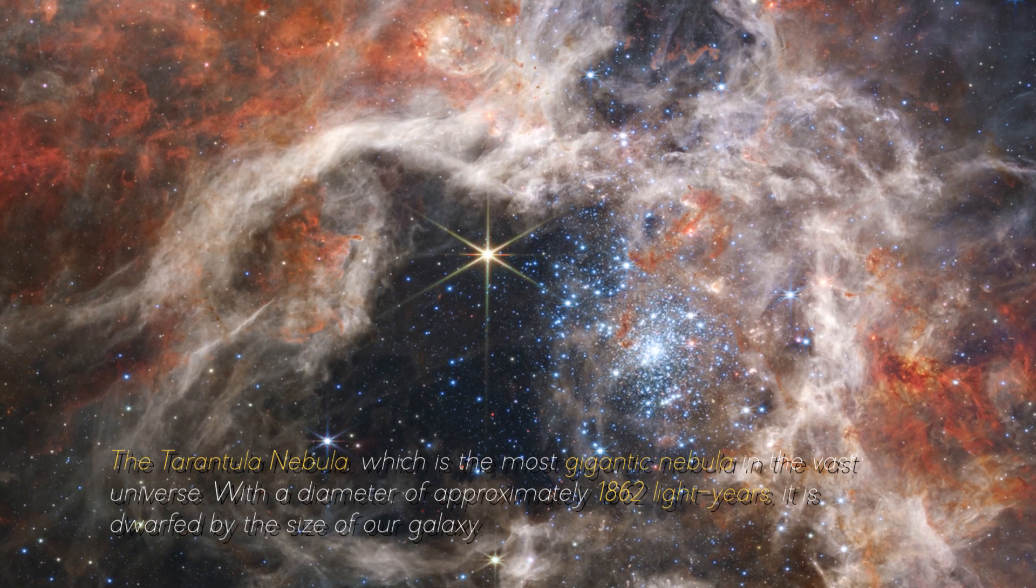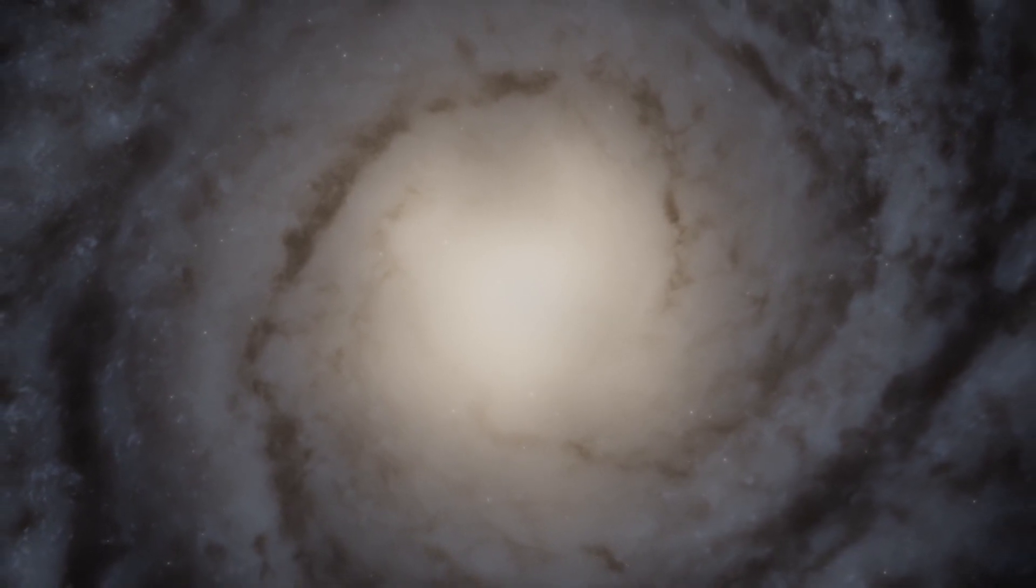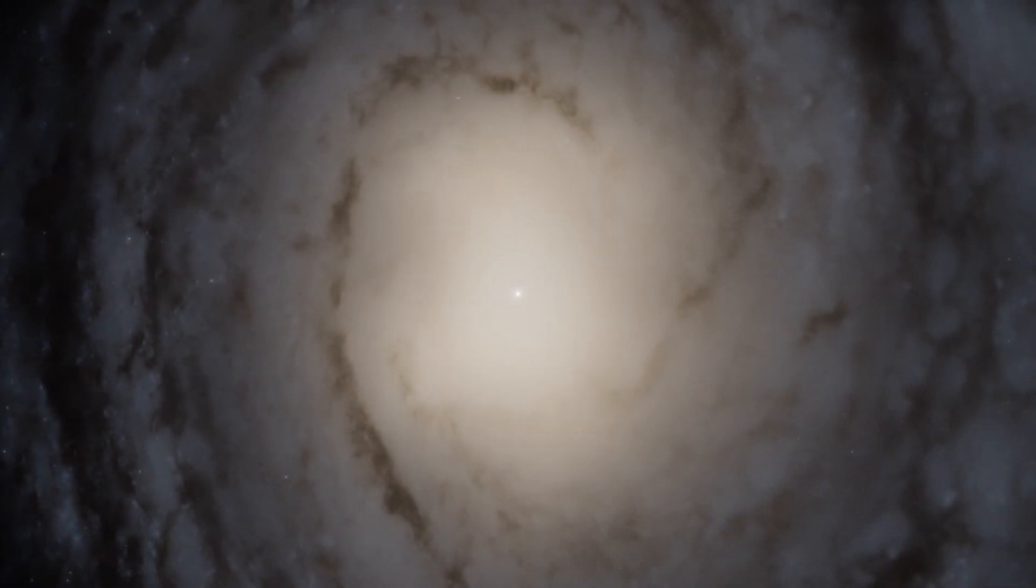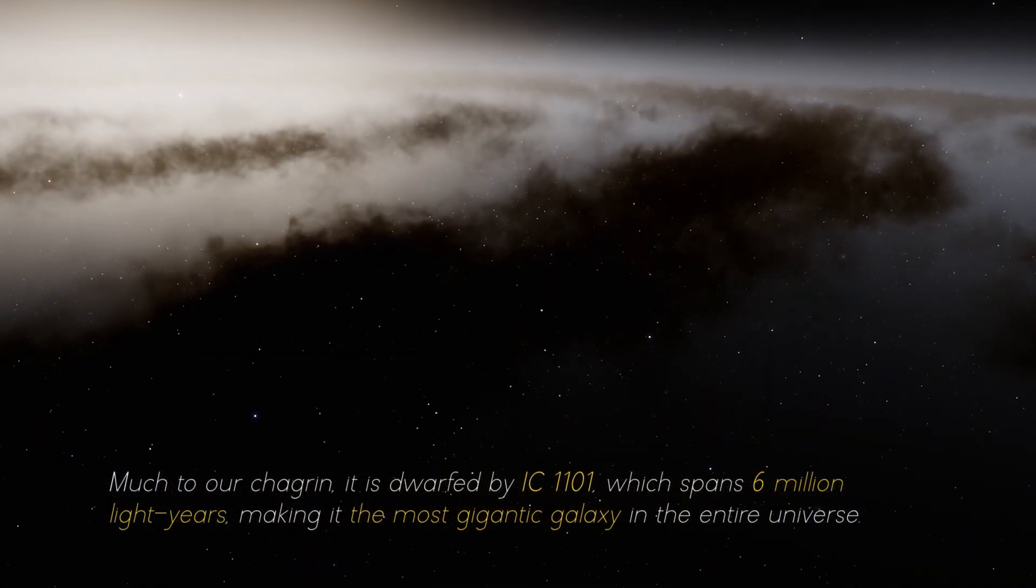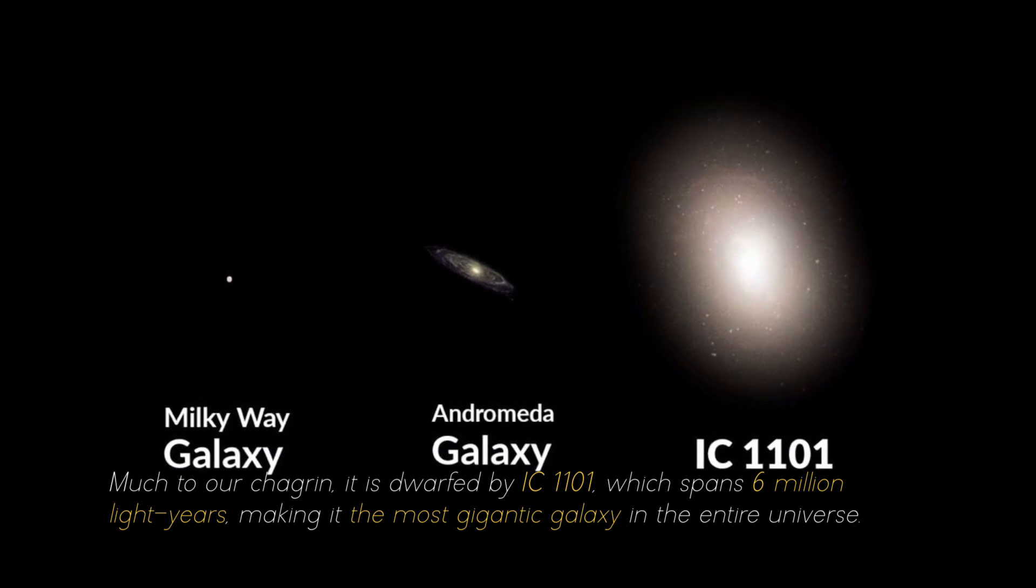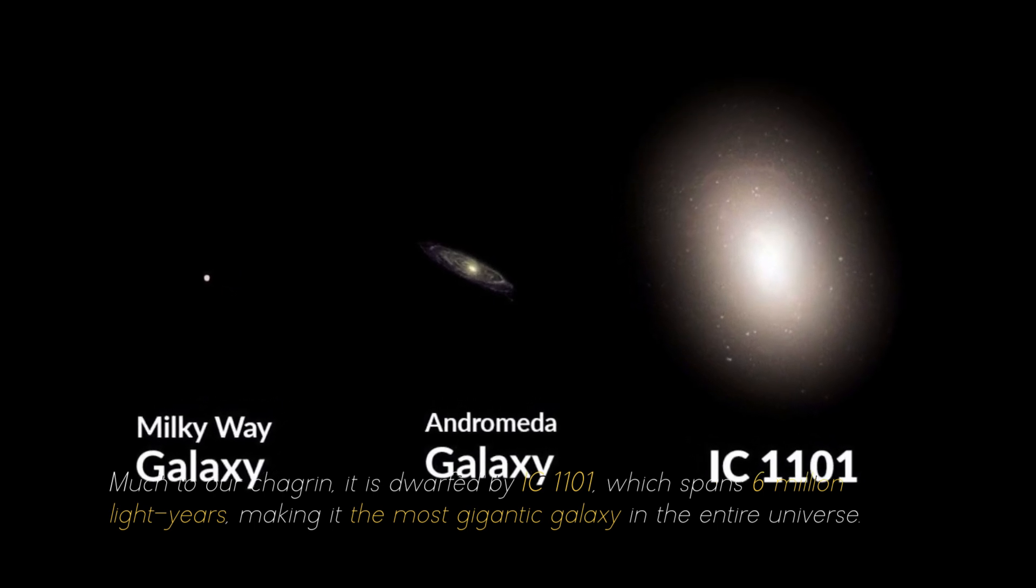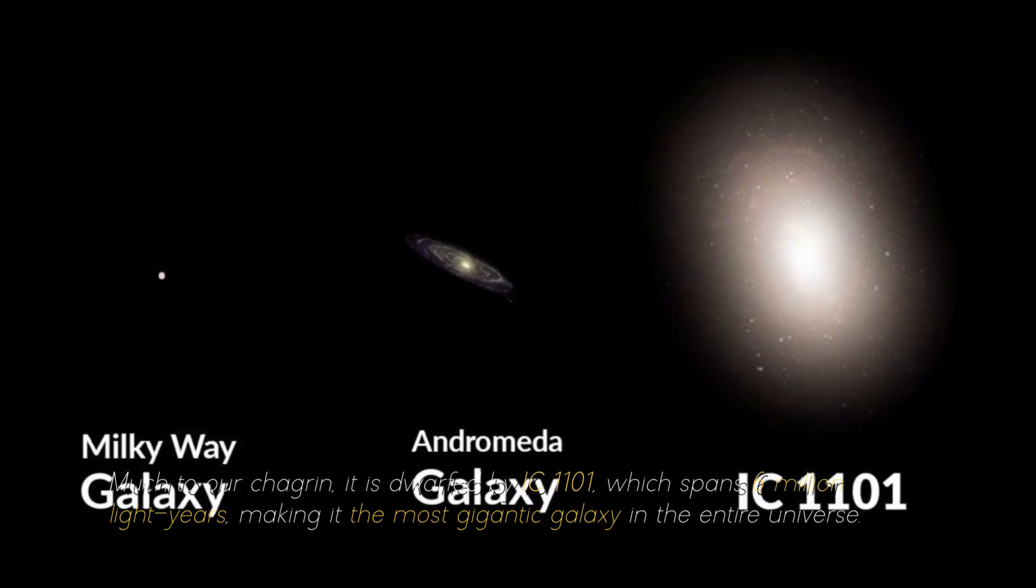It is dwarfed by the size of our galaxy, which spans some 105,700 light years. Much to our chart's range, it is dwarfed by the IC 1101, which spans 6 million light years, making it the most gigantic galaxy in the entire universe.